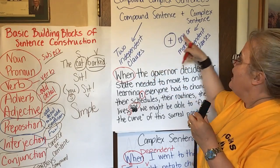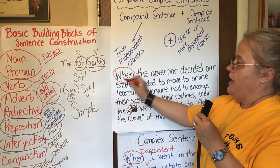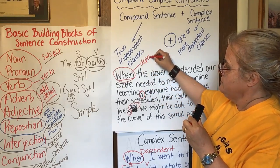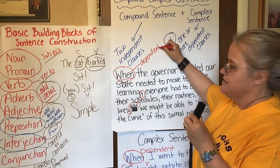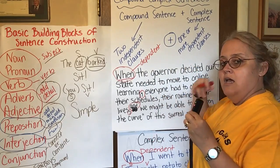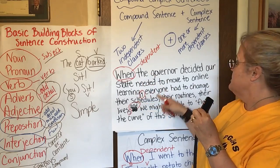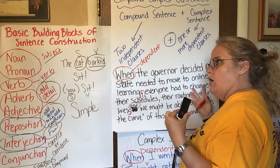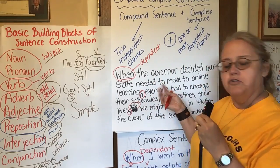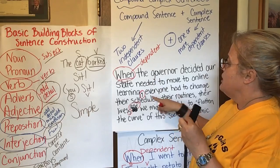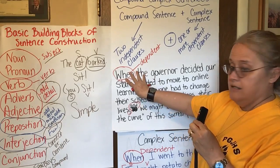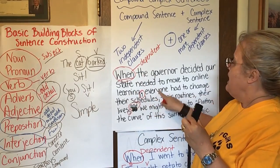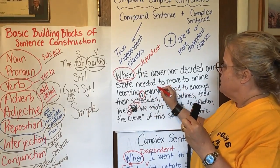I know this is going to be the start of my dependent clause because I cannot just come up to somebody and say, 'Hey Stevens — when the governor decided the state needed to move to online learning' — and then turn around and walk away. That is dependent. So now we have to look at the rest of the sentence: 'Everyone had' — here's a subject.